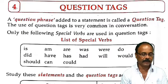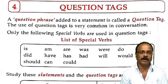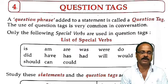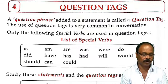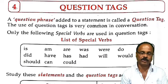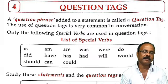What are they? There is: am, are, was, were, has, have, had, shall, will, can, should, would, could, did, do, does. All these are special verbs for question tags.